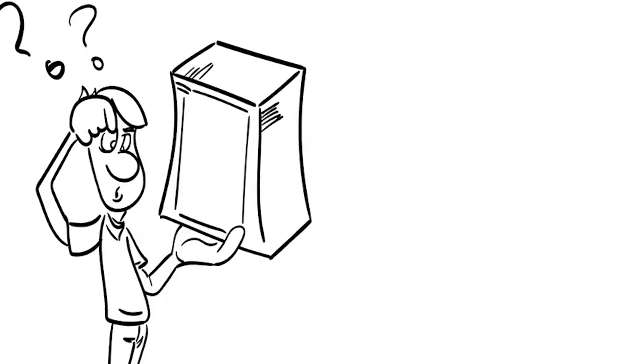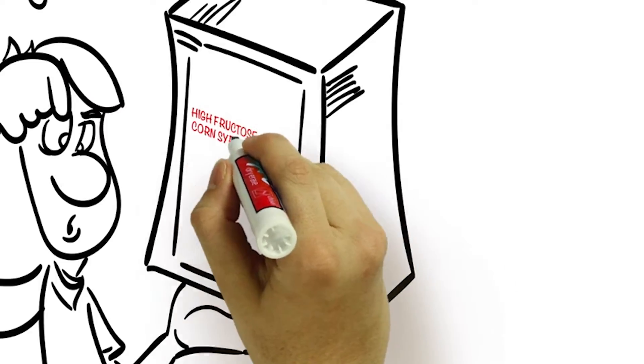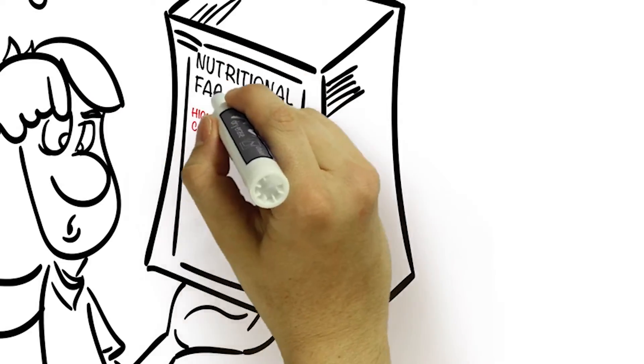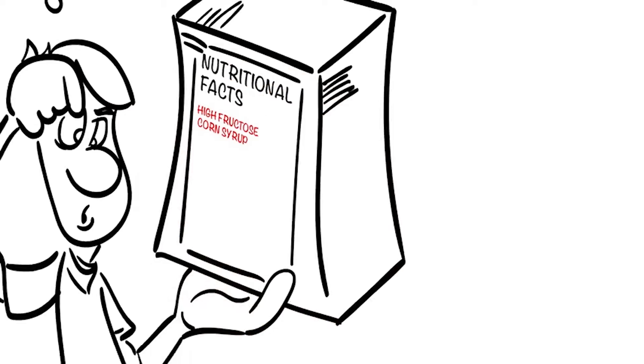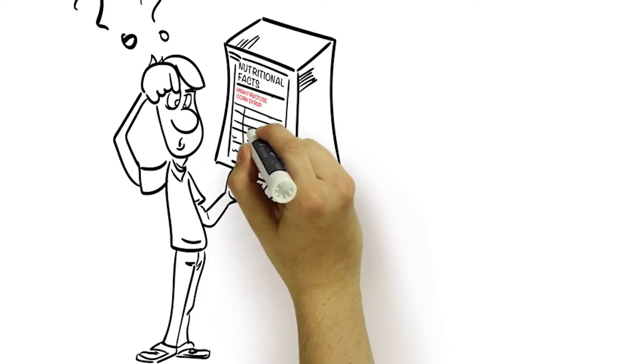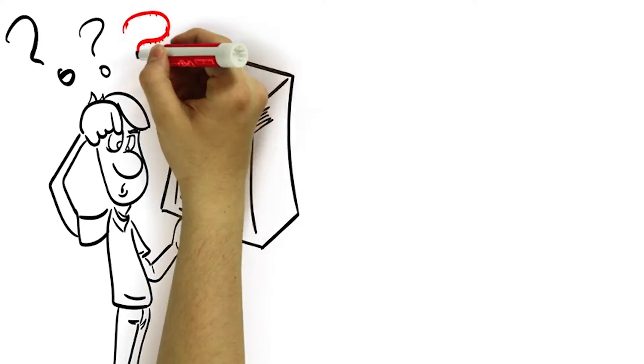I think it's really easy for people to become confused by the kinds of words that we use around food. One of the earliest conversations we had was about high fructose corn syrup — why is it called that, where does it come from, what is fructose and why do we have it in our diet?